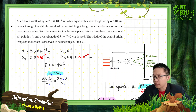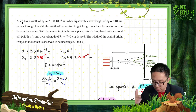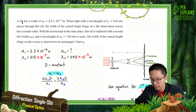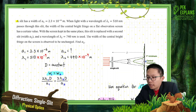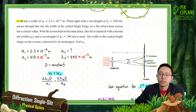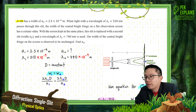Let us look at this question. A slit has a width of — so identify: is this about double slit, single slit, thin film, or diffraction grating? The first keyword we really see is 'a slit.' It's not double slit, it's not two slits, it's not many slits like a diffraction grating. It's only one slit. So this is a single slit question.